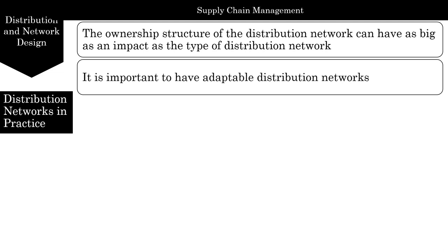Second, it is important to have adaptable distribution networks. Distribution networks must be able to adapt to changing technology and environment — an inability to adapt can be very damaging in times of rapid change. The example of Blockbuster in the movie rental business and Borders in book selling shows that despite great past successes with retail stores, their inability to adapt to the internet allowed competitors like Amazon and Netflix to gain market share. If either Blockbuster or Borders had adapted to take advantage of the internet to create a tailored distribution network, they could have competed effectively.